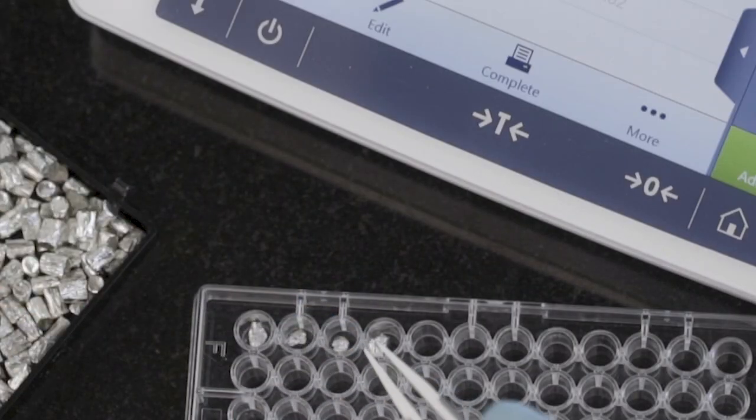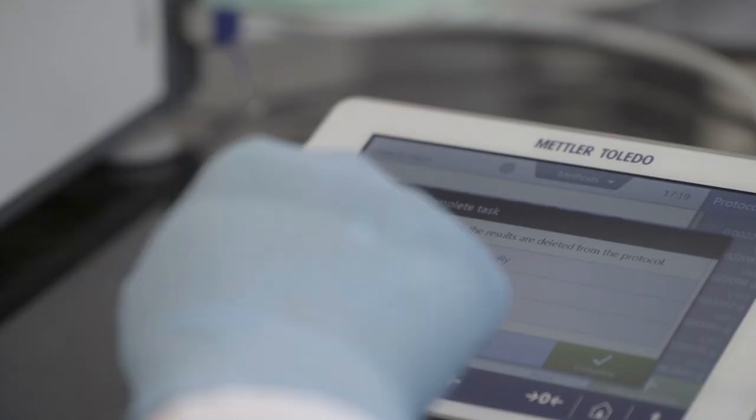Each crucible is carefully sealed using fine tweezers and placed in an appropriate tray for clear identification. Once all the samples are prepared, the weight results can be printed or exported to a computer or USB stick.